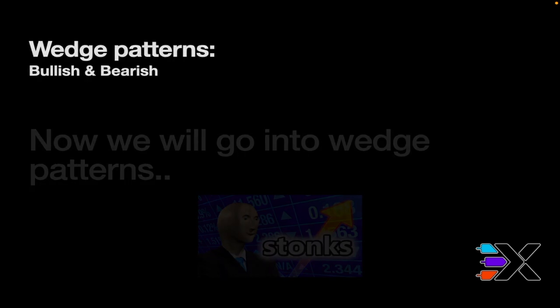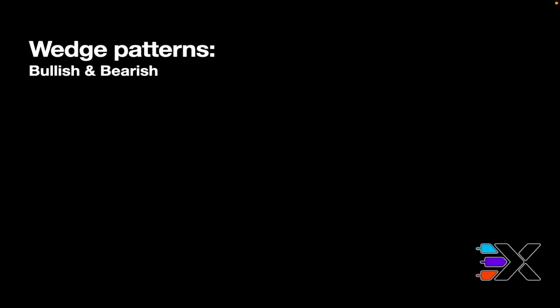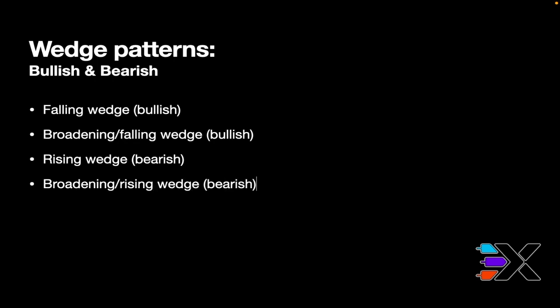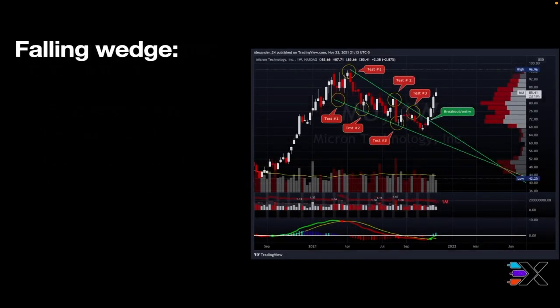Now let's get into wedge patterns. Uptrends and downtrends both directly play into wedge patterns and triangle patterns — these next slides are going to show us why. We're going to go over wedge patterns both bullish and bearish: a falling wedge which is bullish, a broadening falling wedge which is also bullish, a rising wedge which is bearish, and a broadening rising wedge which is also bearish.